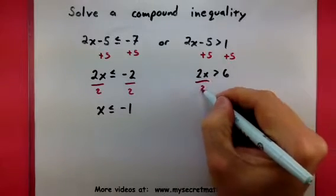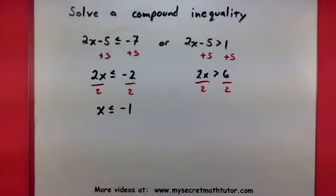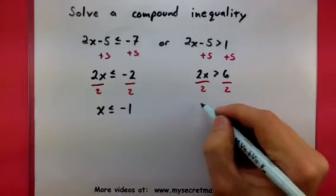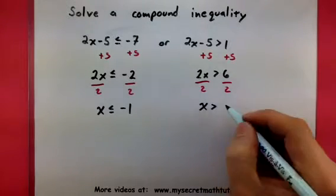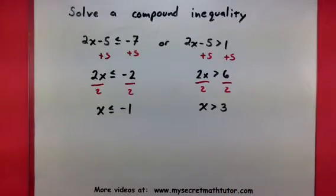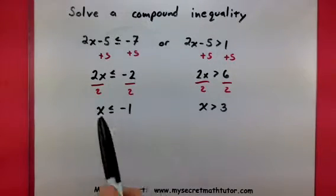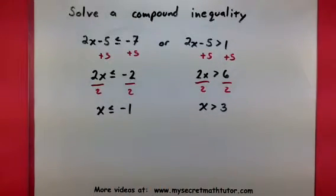Now we'll divide both sides by 2 and end up with X being greater than 3. So notice how I didn't have to flip signs, since when I divided, it was a positive number.